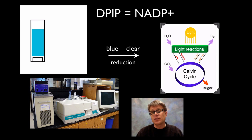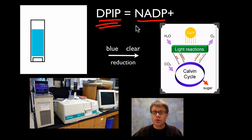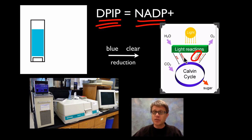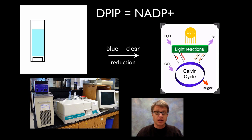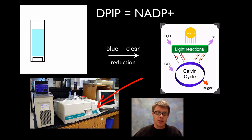One thing you should be ready for is that the College Board uses a different type of lab involving a chemical called DPIP. DPIP takes the role of NADP⁺ — as it accepts hydrogen and gets reduced, it changes from a bluish color to a clear color. You can measure that color change using a spectrophotometer: the faster it turns clear, the faster photosynthesis is occurring. This is just another way to measure the rate of photosynthesis.